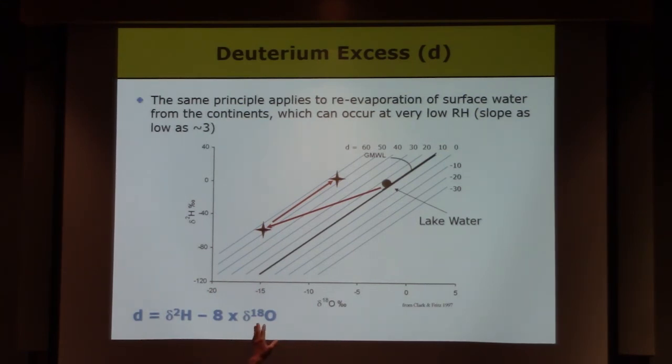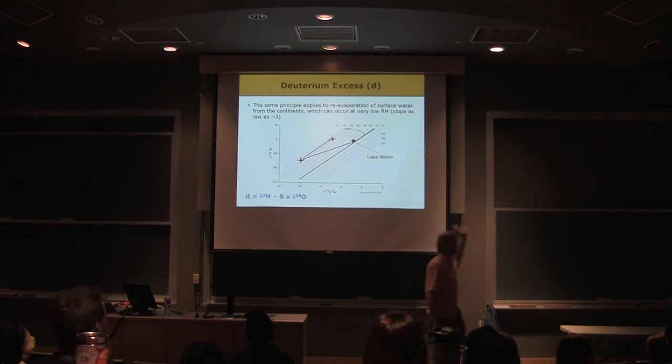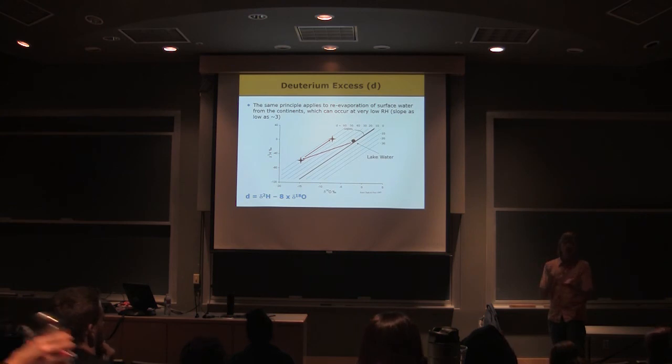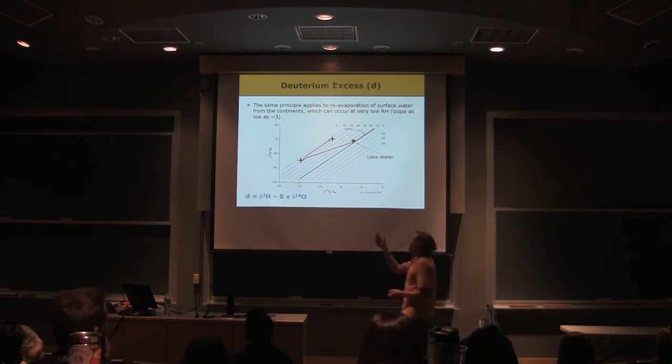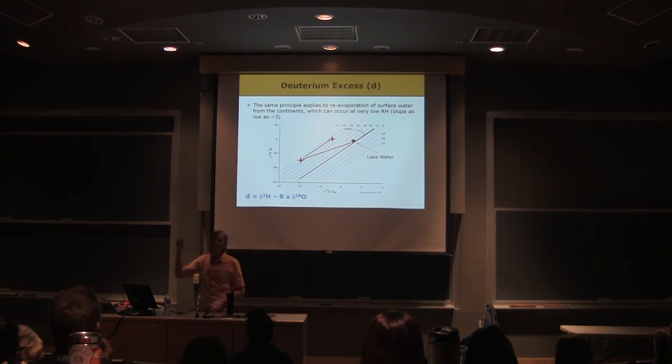And so, for example, we and others have used this to look at rainfall in places like the Midwestern U.S. where you have the Great Lakes, right. Those are big exposed pools of water in the middle of the continent, right. And they're a potential source of water to the atmosphere.